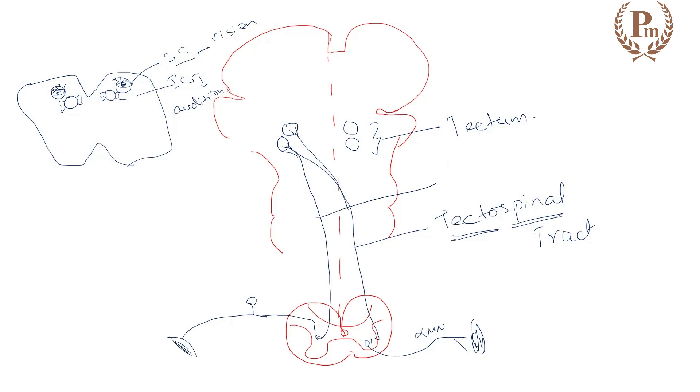These fibers are called, since they are originating from the spinal cord and going to the tectum, we call them as spinotectal tract. Clear? So, we have the interconnections from the tectum to the spinal cord and from the spinal cord to the tectum.